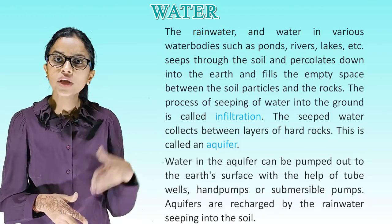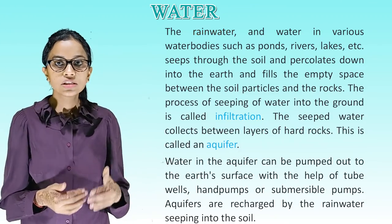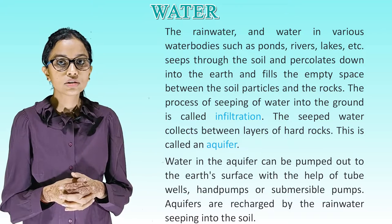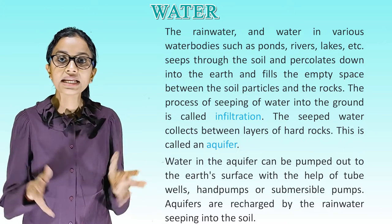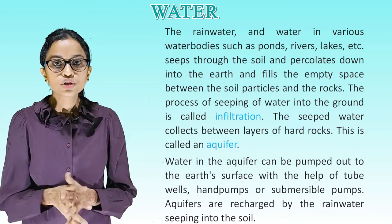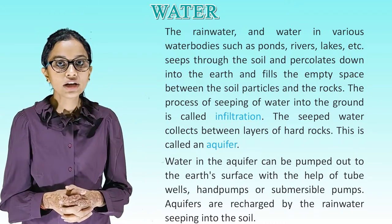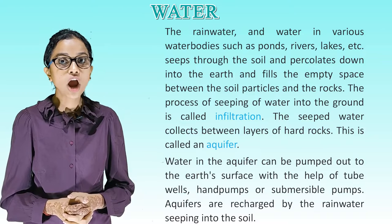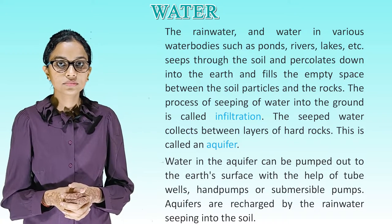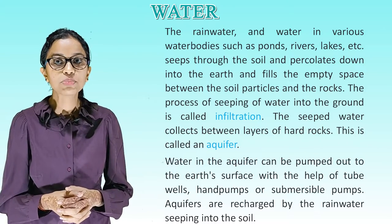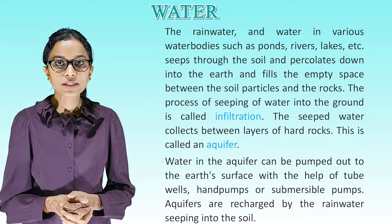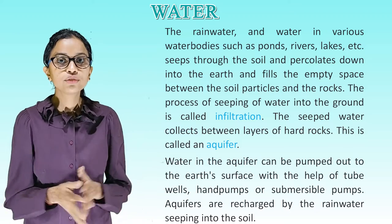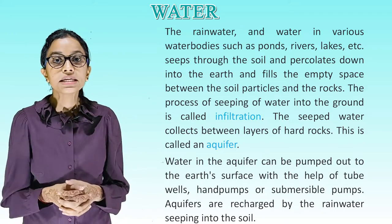Rainwater and water in various water bodies such as ponds, rivers, lakes etc. seep through the soil and percolate down into the earth, filling the empty spaces between soil particles and rocks. The process of seeping of water into the ground is called infiltration. The seeped water collects between layers of hard rocks — this is called an aquifer. Water in the aquifer can be pumped out to the earth's surface with the help of tube wells, hand pumps or submersible pumps. Aquifers are recharged by rainwater seeping into the soil.